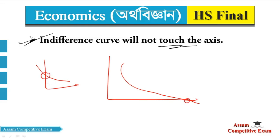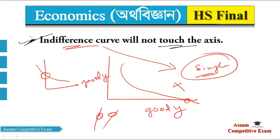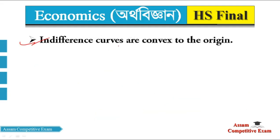Regarding the single commodity consumption — the indifference curve involves double commodity consumption, good X and good Y. If the curve were to touch the axis, it would represent only single commodity consumption. Therefore, the indifference curve will not touch the axis.